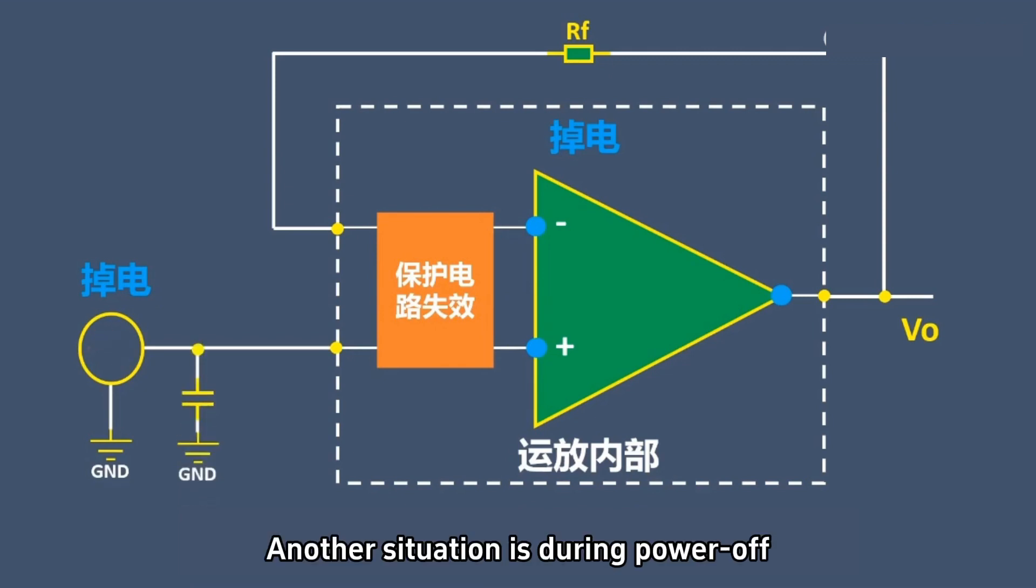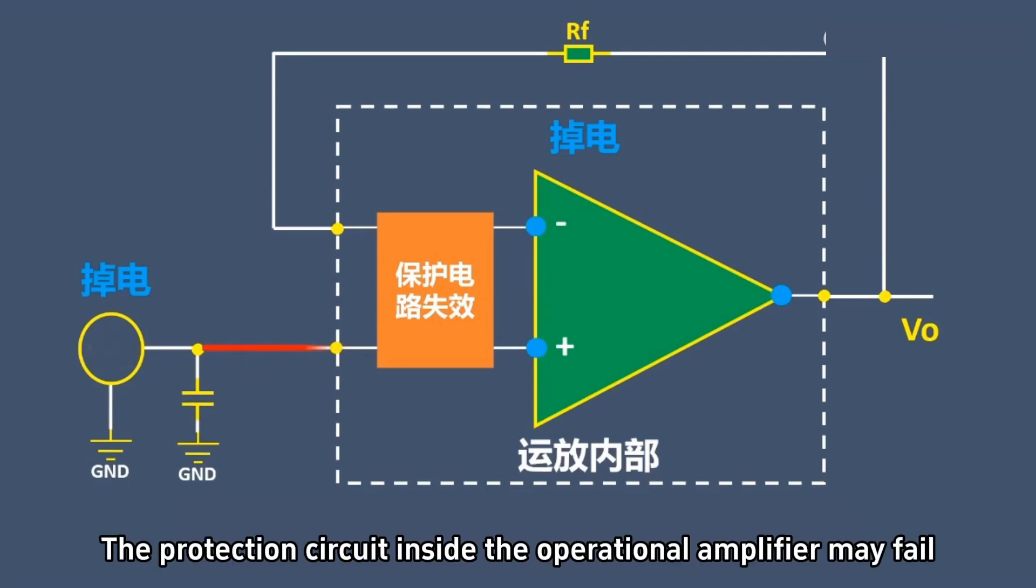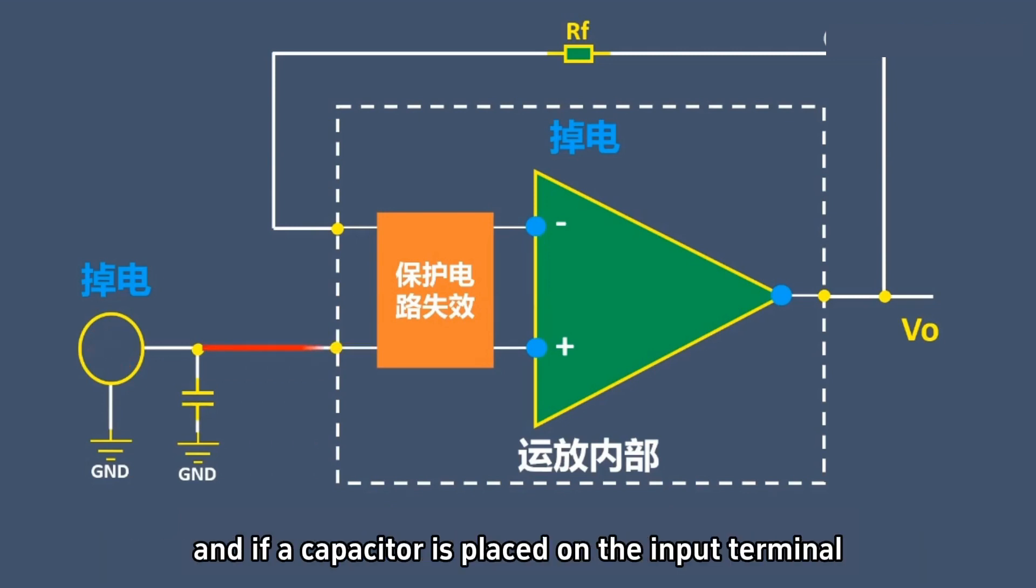Another situation is during power-off. The protection circuit inside the operational amplifier may fail, and if a capacitor is placed on the input terminal, the input voltage will not suddenly disappear.